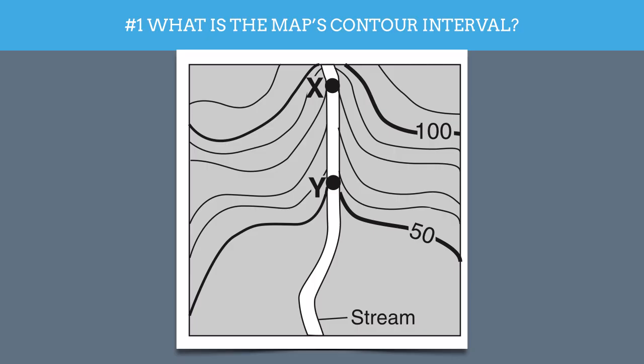Now, this particular map has a handful of contour lines, and you'll notice that some of them are darker in color. Well, those are called index contours. We have a 50 index contour and a 100 index contour. And then we have some other lines that aren't quite as bold.